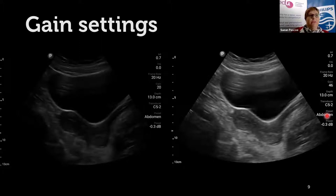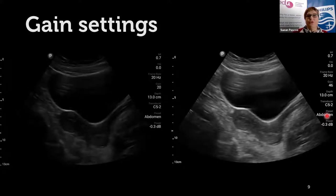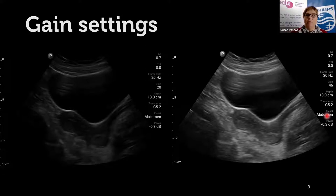Gain is also important. On the left-hand image, the gain is set nicely for a bladder image, but the imaging of the uterus and deeper structures is too dark. On the right, I've optimized the gain for the uterus but the bladder gain is not ideal. You can't get one gain setting in the pelvis that lets you see both bladder and uterus very nicely, so make sure the gain is set appropriately for the structures you're trying to visualize.